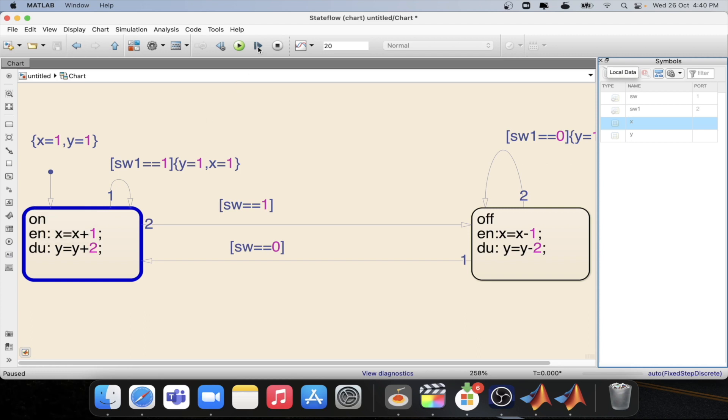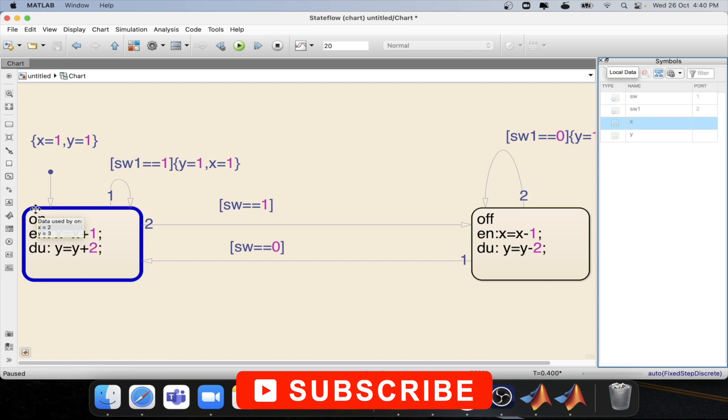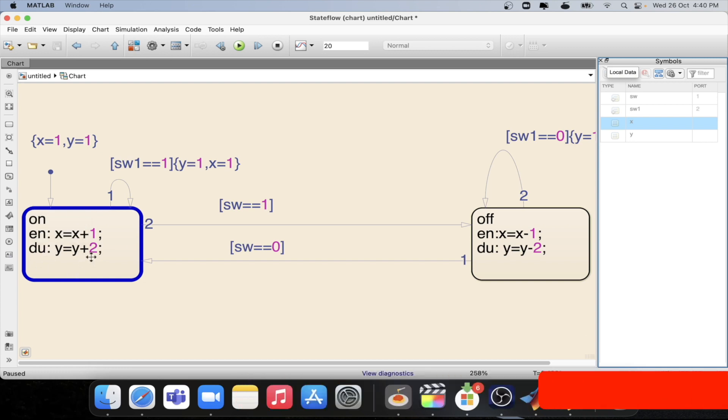Now let's step again. Y will be 3 and now x equal to 2 and y equal to 3. This is happening because of the during condition. Because this is staying in the same state.